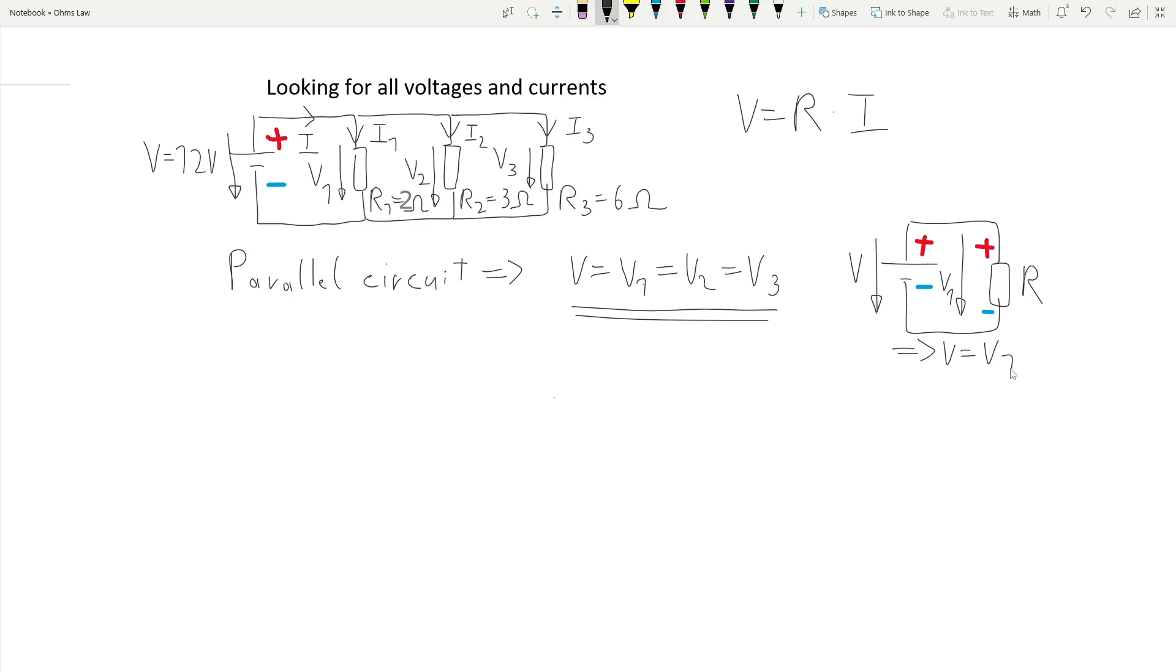Now we can apply Ohm's law for every resistor. V1 equals R1 times I1. Dividing by R1 leads to I1 equals V1 over R1, and this is equal to V over R1. Therefore we have 12V over 2 Ohm and this equals 6A.